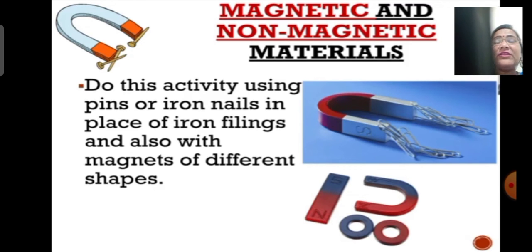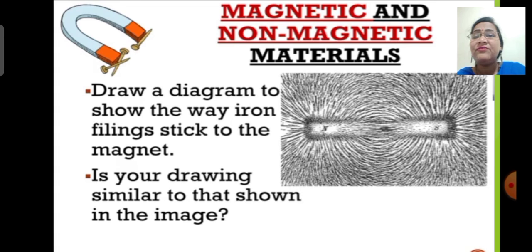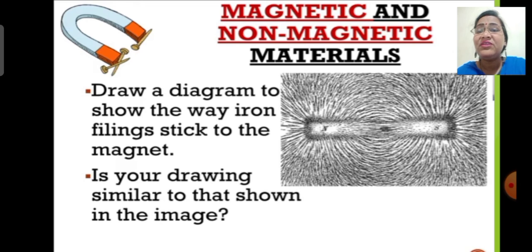Instead of a bar magnet, you can use different types of magnets like a U-shape or horseshoe shape magnet, or a circular magnet. Repeat this activity a few times to observe the change in the pattern. Try this activity at home, draw a diagram of exactly what you observed — how the iron particles are getting stuck to the magnet — and compare your diagram to the image shown here on the screen to see whether they are similar.